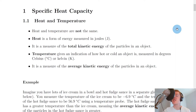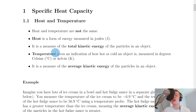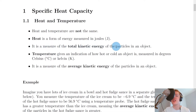The terms heat and temperature are often used in everyday life to mean the same thing. However, heat and temperature are not the same. We say in general terms that heat is a form of energy measured in joules. But to be more specific with a physics definition, we say that heat is a measure of the total kinetic energy of the particles in an object.